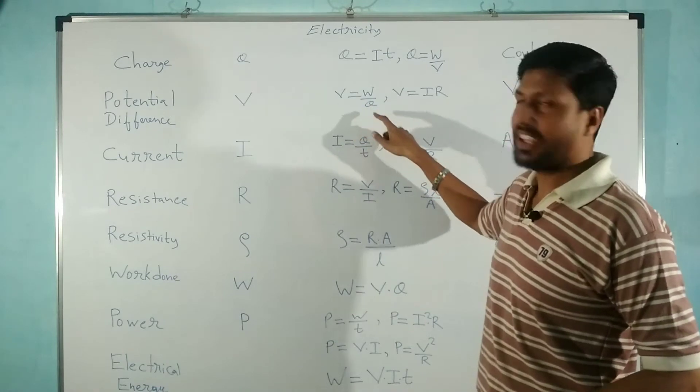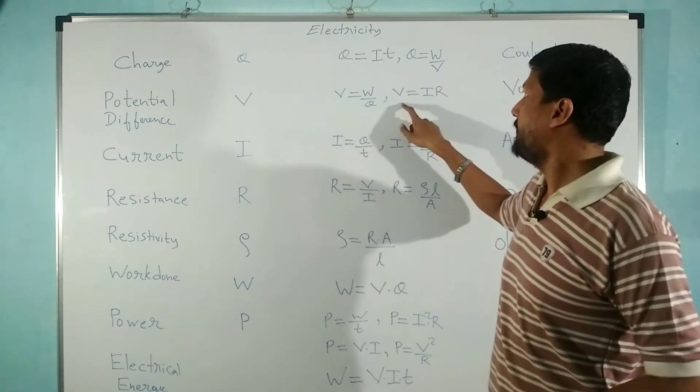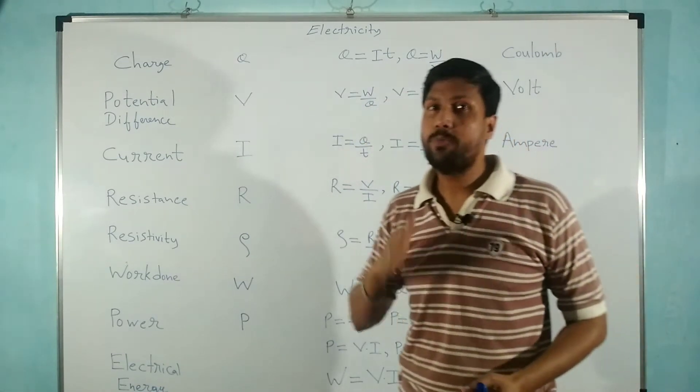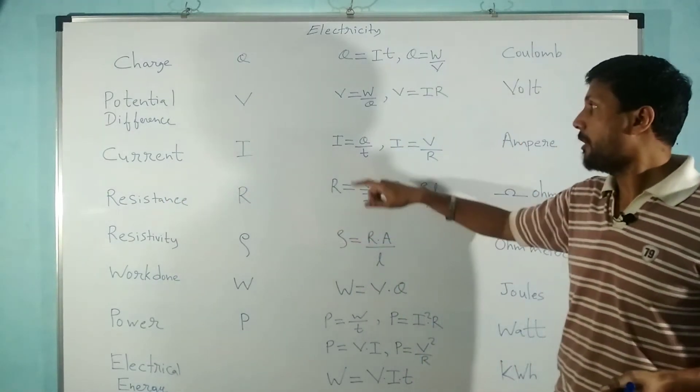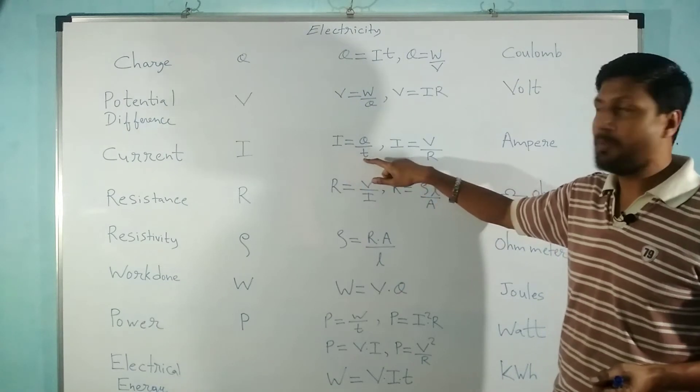The symbol of current is capital I. The formulas for current are I equals Q upon T and I equals V upon R.